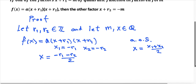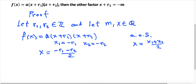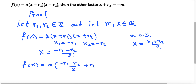Now, instead of x in the main formula, I am going to substitute minus r1 minus r2 divided by 2. So f(x) becomes a times (minus r1 minus r2 divided by 2, plus r1) times (minus r1 minus r2 divided by 2, plus r2).